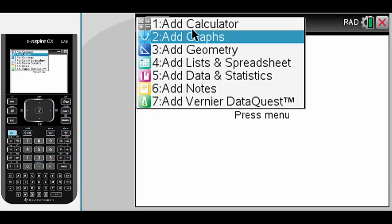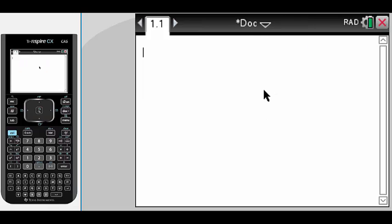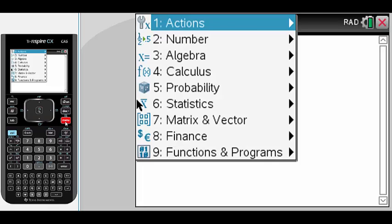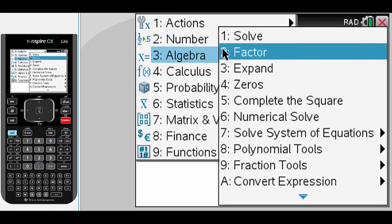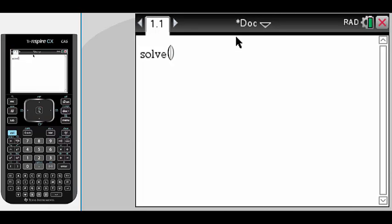Firstly we start a new document and use the calculator app. We're going to click menu and choose algebra and then number one solve. We'll solve x plus 6 equals 17 and we want to solve that for the variable x. So we go comma x, hit return, giving us the answer of x equals 11.